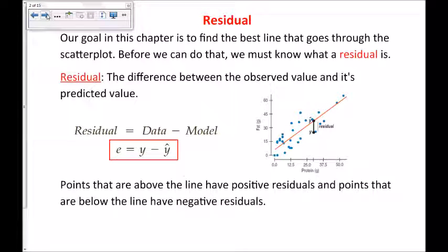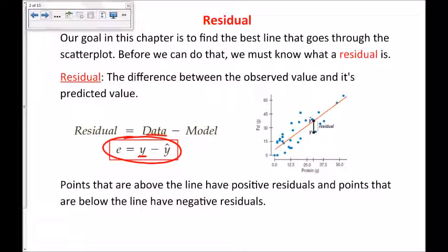So, residuals. Our goal in this chapter is to draw a line of best fit that goes through the scatterplot. A residual is the difference between the observed value and its predicted value. Mathematically, you'll take the point that comes from the data, which we'll call y, and subtract from that our predicted value — what comes from our model or our line of best fit — which would be y-hat.